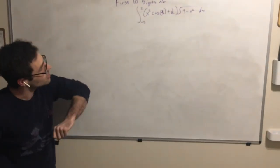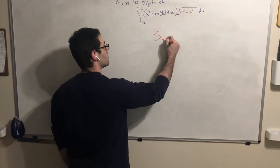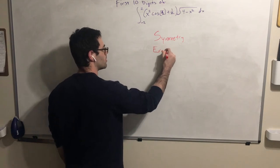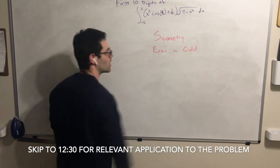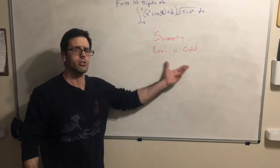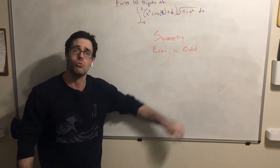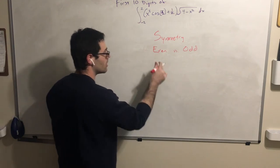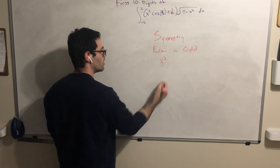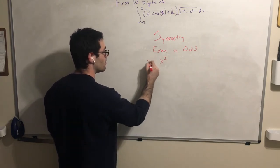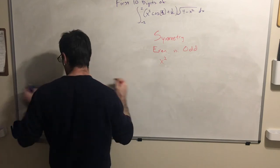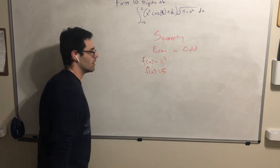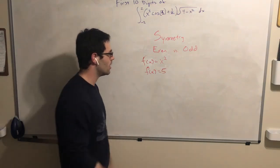The first thing we're going to look at is the idea of symmetry — specifically, what it means to be an even function and what it means to be an odd function. These are very particular types of symmetry. An even function acts very much like even polynomials. If you think of an even function, you might think of something like f(x) = x² or f(x) = 5 — those are examples of even functions.